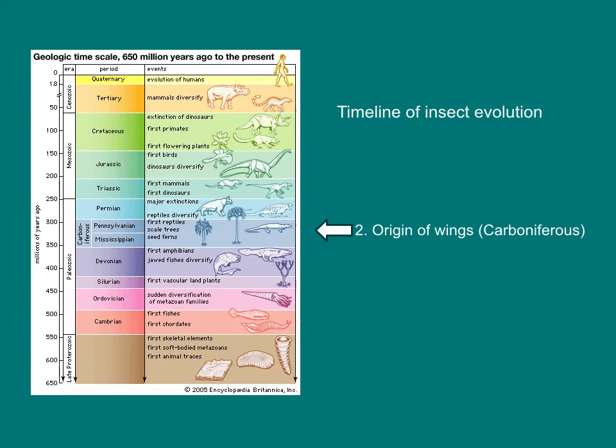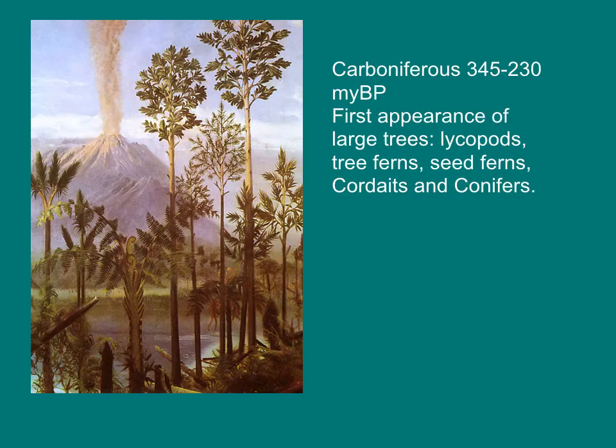The next major event in insect evolution was the origin of wings. Insects evolved wings in the Carboniferous, approximately 300 to 325 million years ago. By the Carboniferous, there were large forests dominated by lycopods, tree ferns, seed ferns, cordites, and conifers. Wings likely evolved to allow movement in this three-dimensional environment.